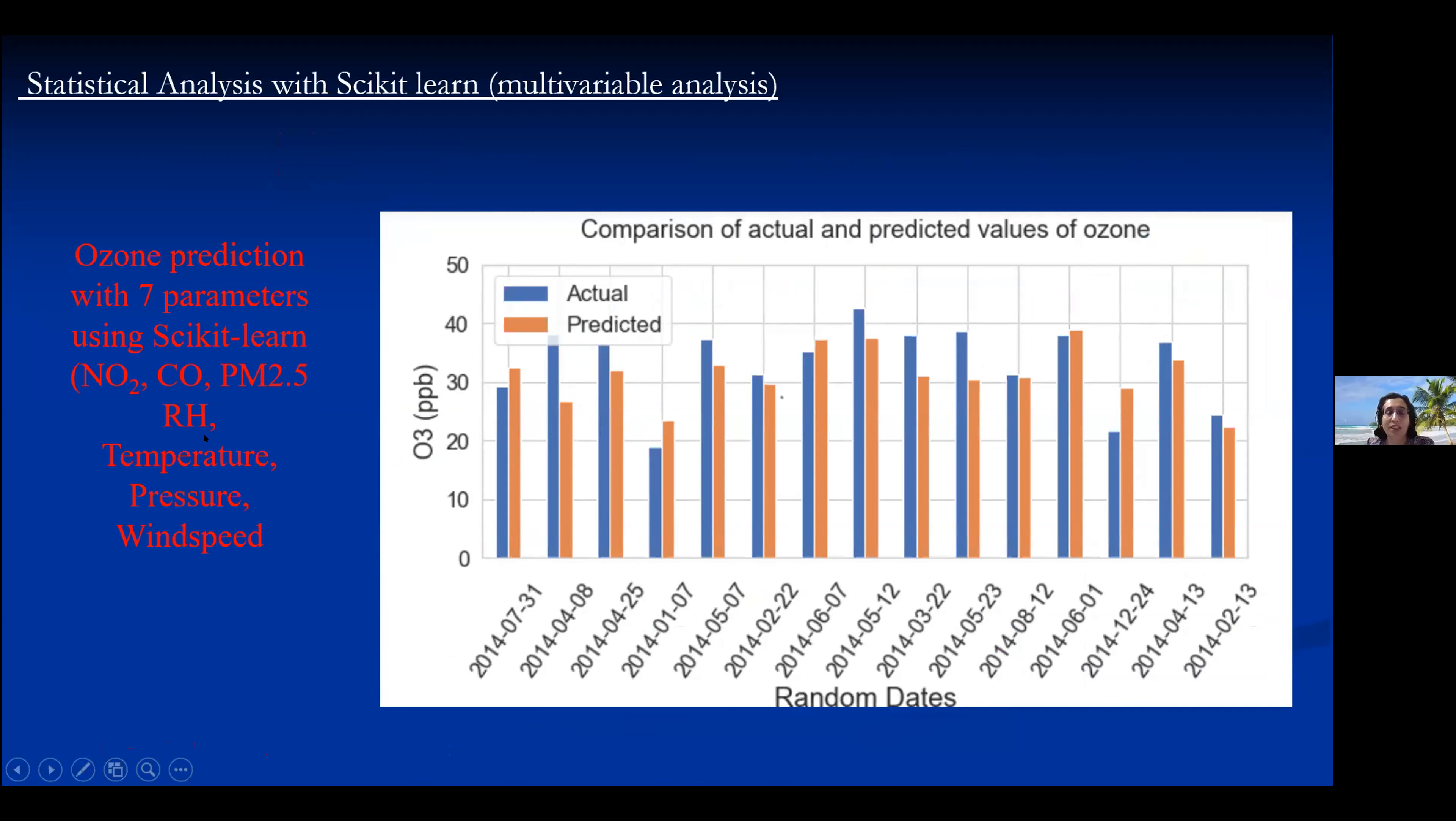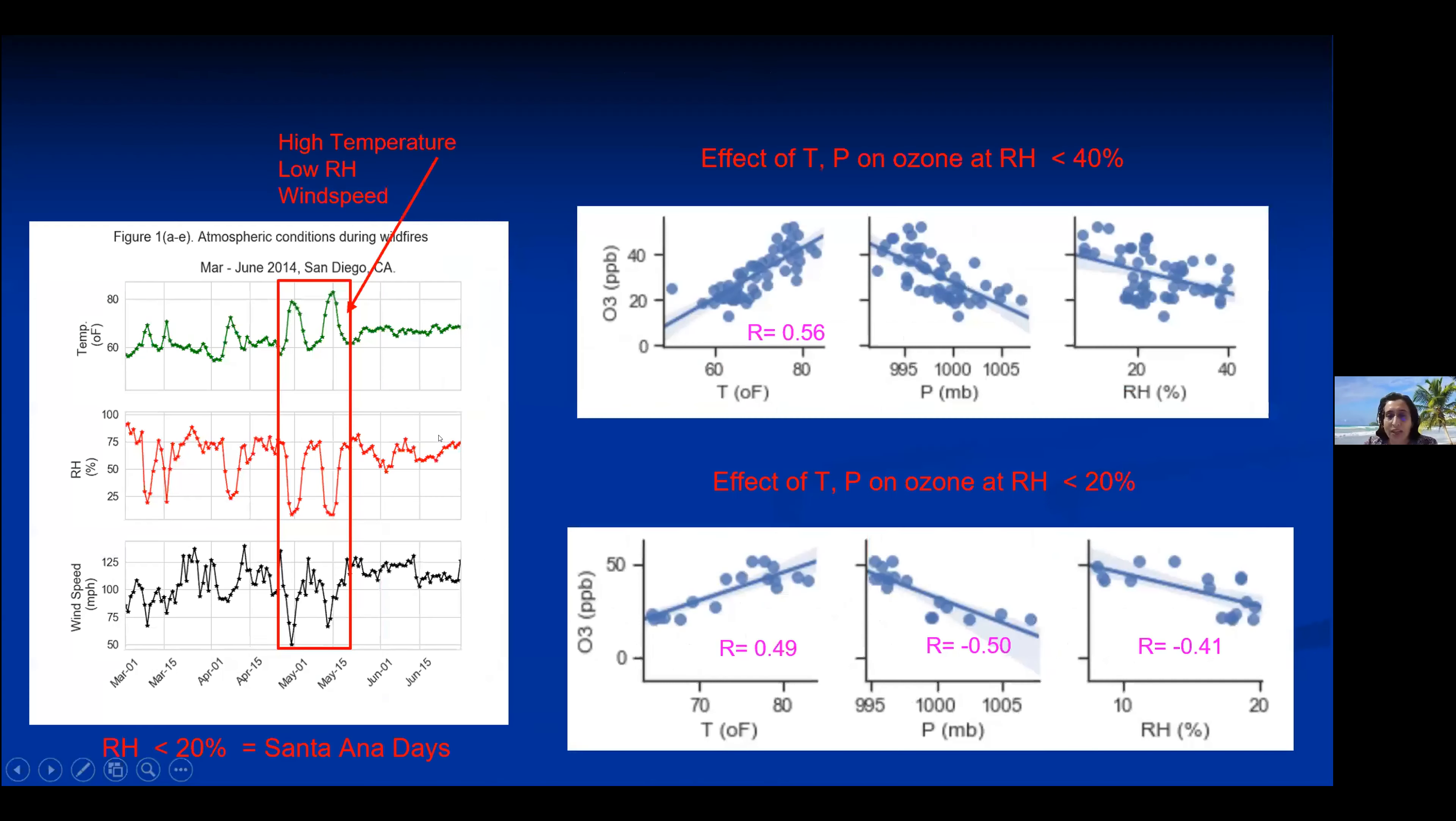And wind speed, relative humidity also, and as you can see it's a really good prediction with regard to most of the days except few days when there is a very high fire at the maximum level. And those are the days that somehow it's not able to predict ozone level.